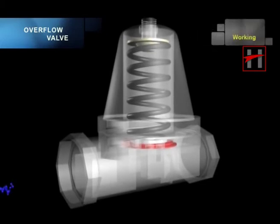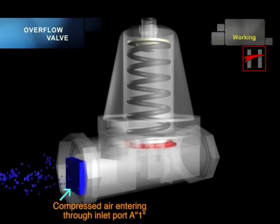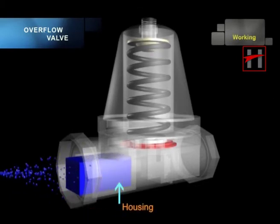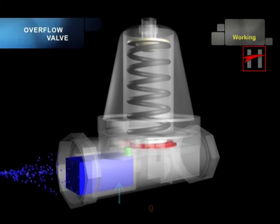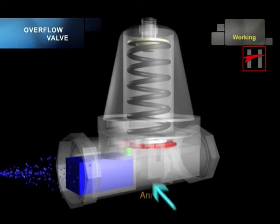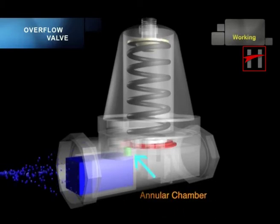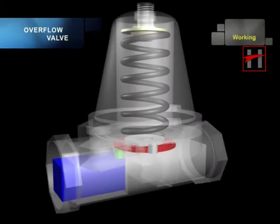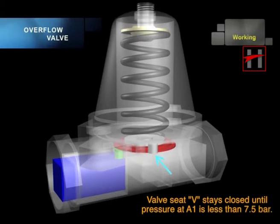The compressed air is admitted through the inlet port A1. It passes through the housing and enters the annular chamber below the diaphragm. The valve seat V stays closed as long as the pressure at A1 is less than 7.5 bar.